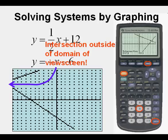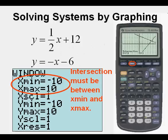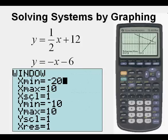Well, what has happened here is the intersection is outside of the domain of the view screen. It is to the left of it. And what happens is the intersection must be between x min and x max. So it has to be, in this case, between negative 10 and positive 10 in order to not give us an error message. And so what we are going to do is change this value of negative 10. And we notice it was to the left of the view screen, so we are going to make it negative 20.